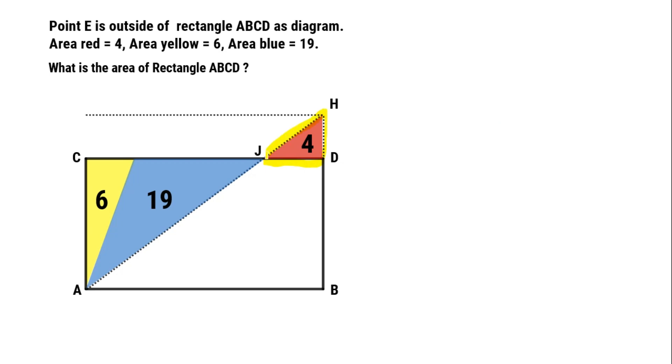Triangle JDH is similar to triangle JAC. Using the proportional area theorem, we can get JD squared over JC squared equals 4 over 25. Therefore, JD over JC is 2 over 5.